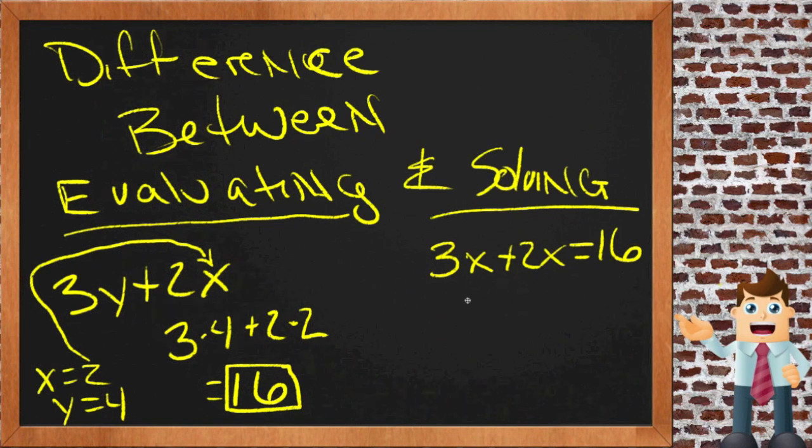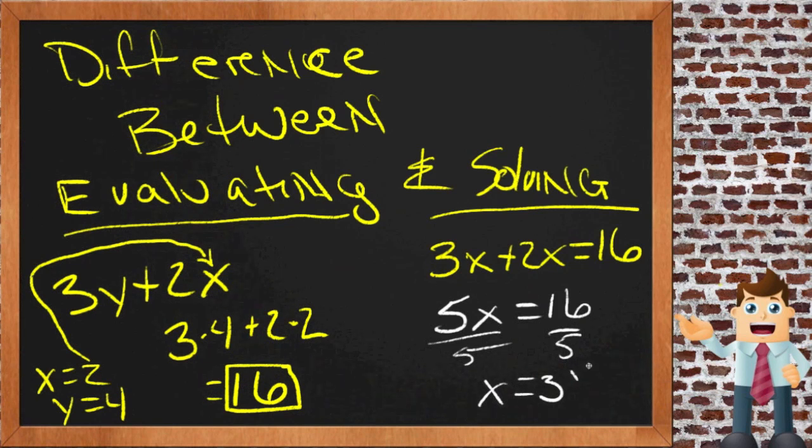So here we'd have 3x plus 2x, that's 5x. 5x equals 16. Divide both sides by 5. And we get x equals 3 and a fifth.